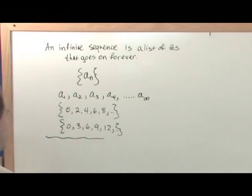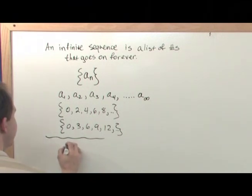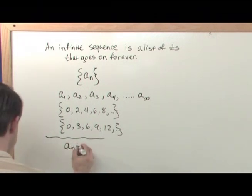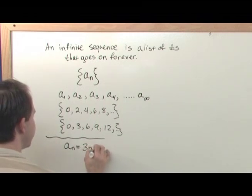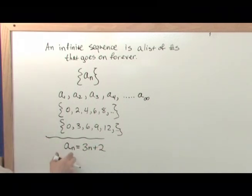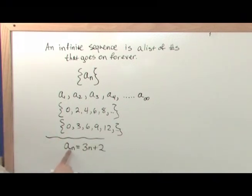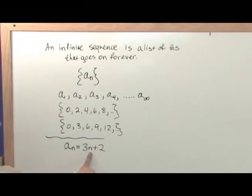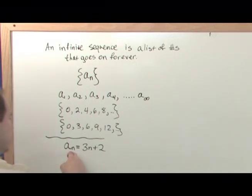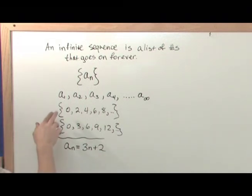Here we're just going to get into our first problem and I'm going to show you how these things are written down. If somebody said here is a sequence and the elements of this sequence are given by 3n plus 2, what this means is that every element of the sequence — a sub 1, a sub 2, a sub 3, a sub 4 — to find each element all you do is you plug in the number. So this is very much like a function: you put a number in, you get a number out. This is just a quick way of keeping track of the elements in the sequence.